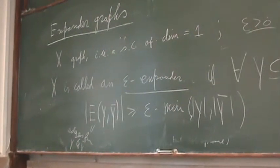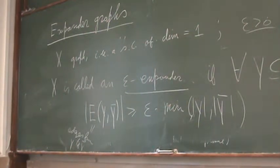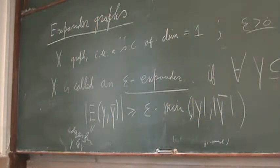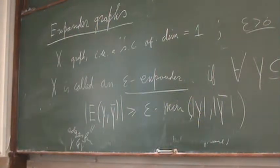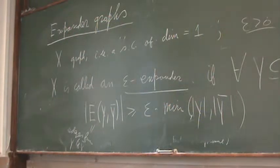Sometimes people say: for every Y which is not more than half of the points of X, its boundary is at least epsilon times the size of Y. For every subset Y, the number of edges going from Y to the other side is at least some constant times the size of the set. Of course, if the set is very small, we cannot expect much going out of it.